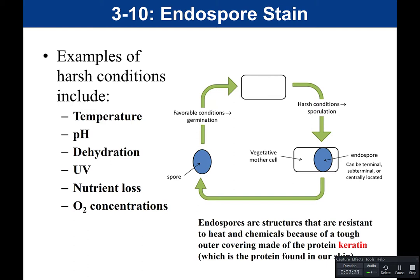You can think of endospore formation as a structure that bacteria produce, kind of like going into hibernation. If you think about a bear going into hibernation during the winter, the endospore is a structure that bacteria use to basically wait it out until conditions become favorable. We start with the vegetative mother cell, which is metabolically active. When that cell encounters a harsh condition, it undergoes a process called sporulation — it forms the endospore.